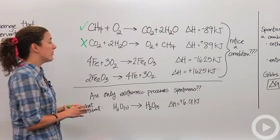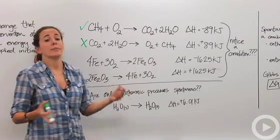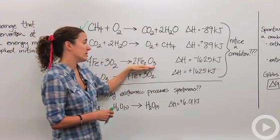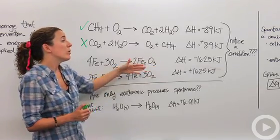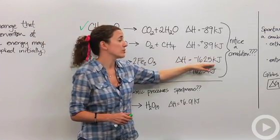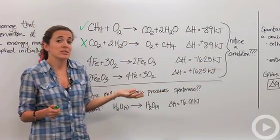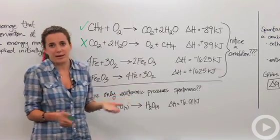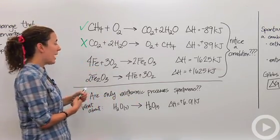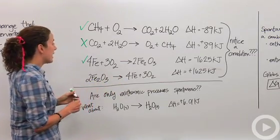Let's talk about rust. If you leave your bike outside in the rain or exposed to the elements, that iron will react with the oxygen in the air and form rust or iron 3 oxide. It releases 1625 kilojoules of energy. This reaction will happen without us doing anything. We sometimes don't want it to happen and it happens all the time. This is a spontaneous reaction.